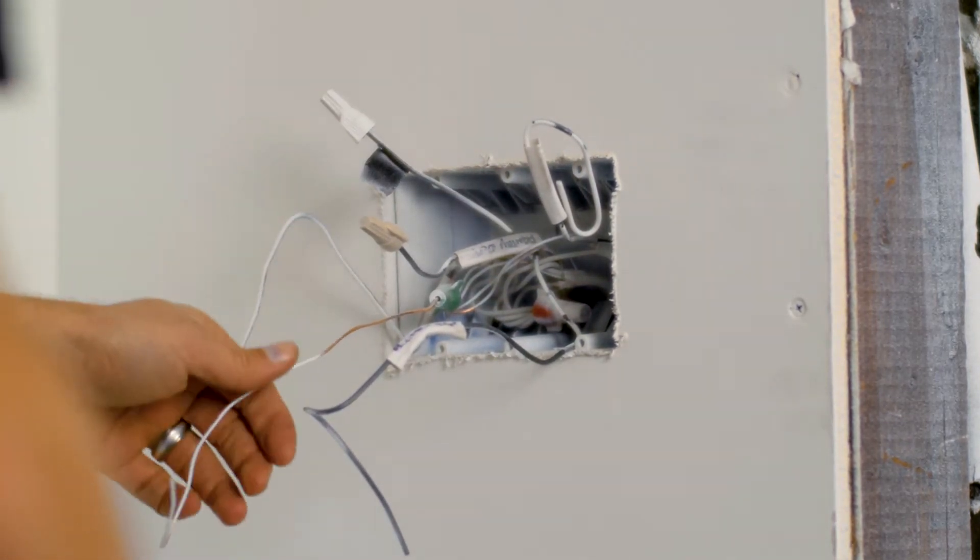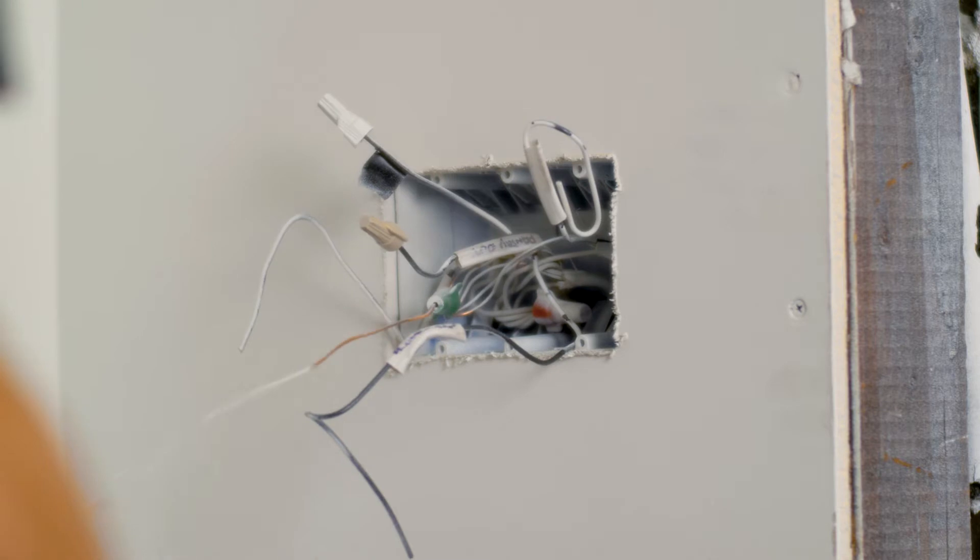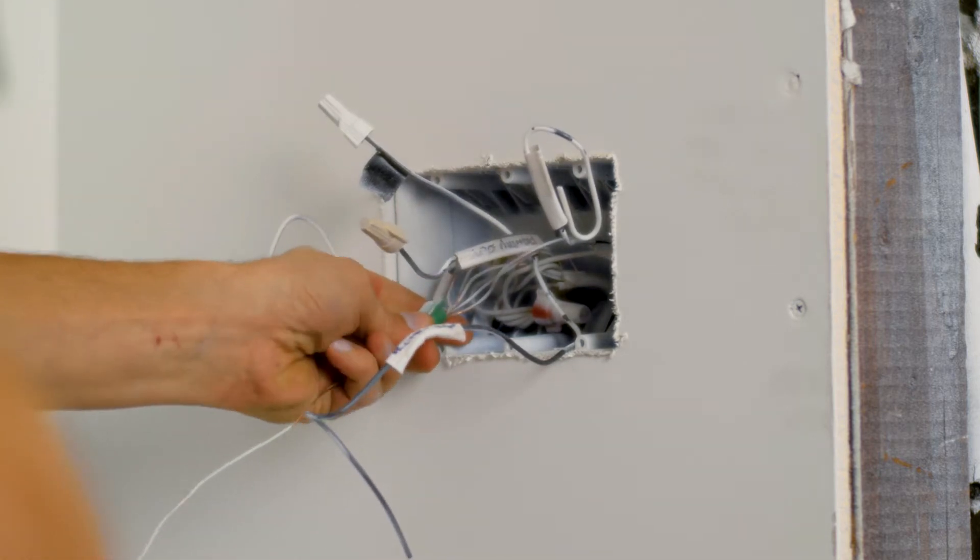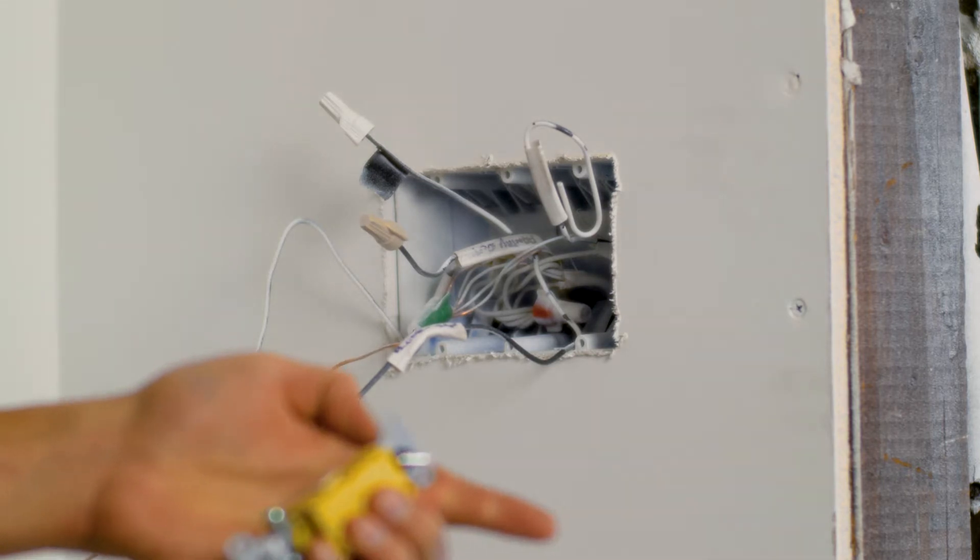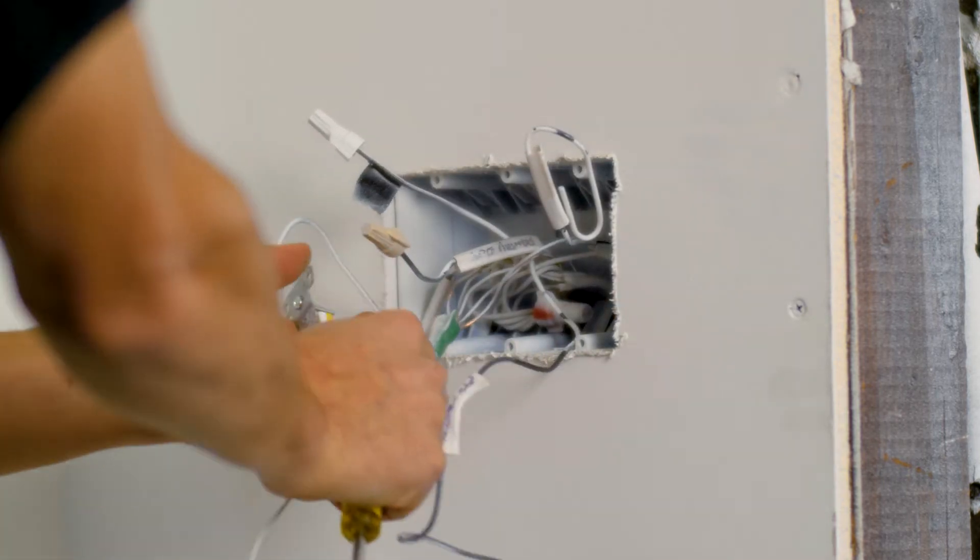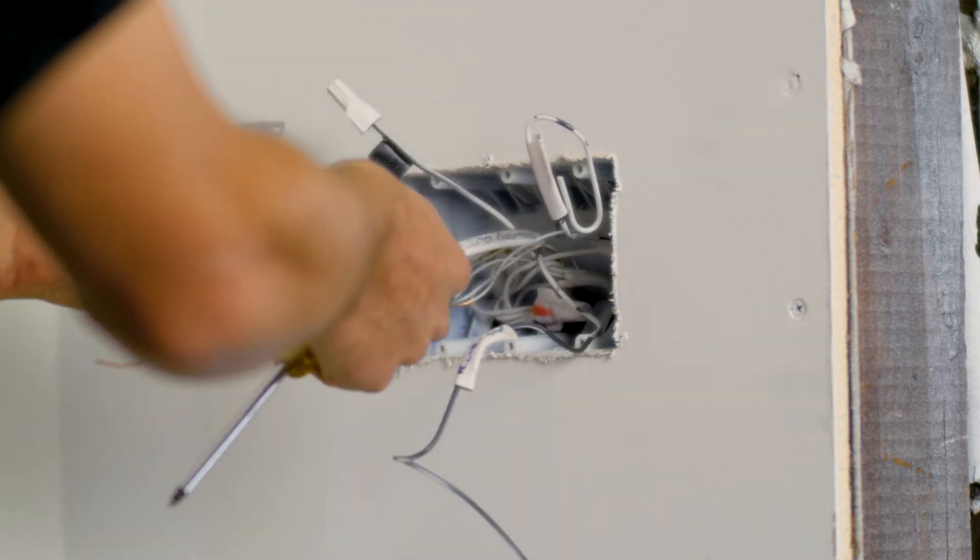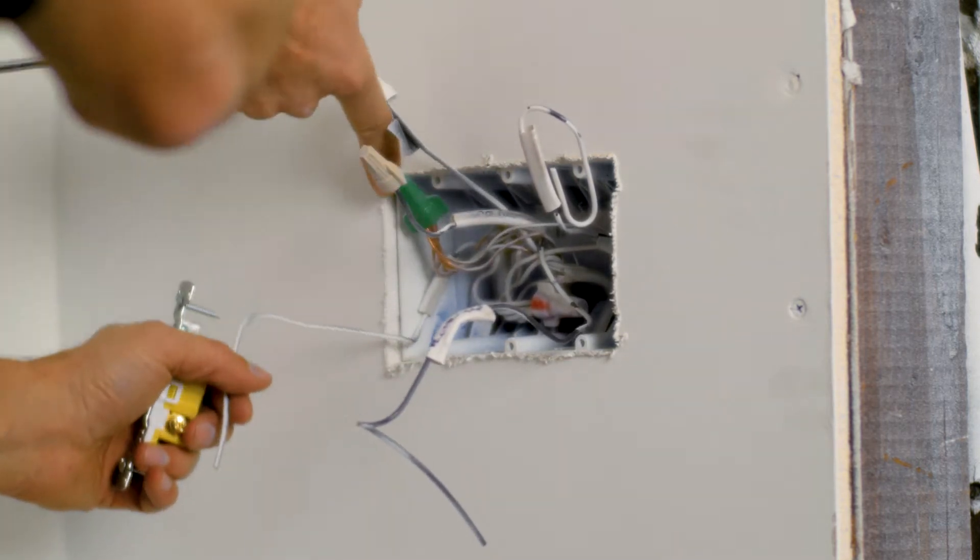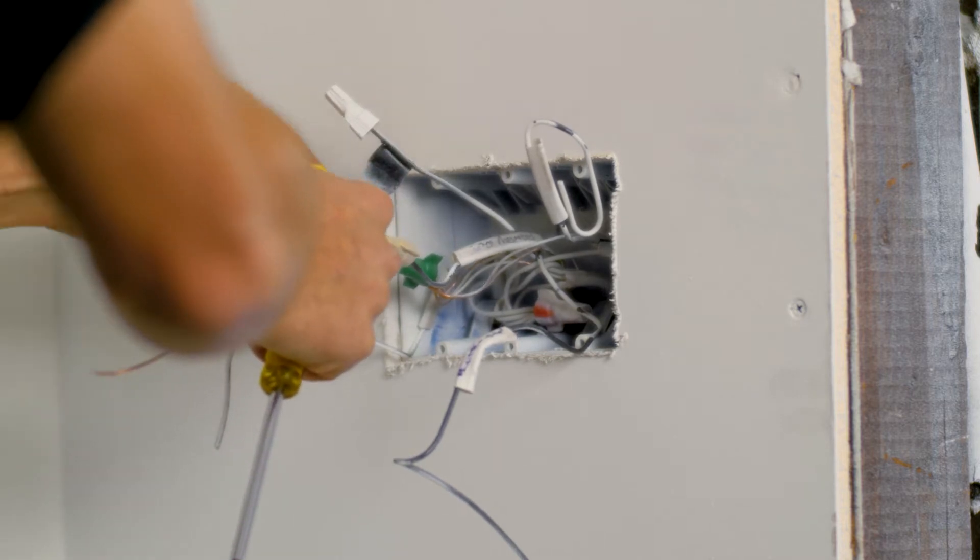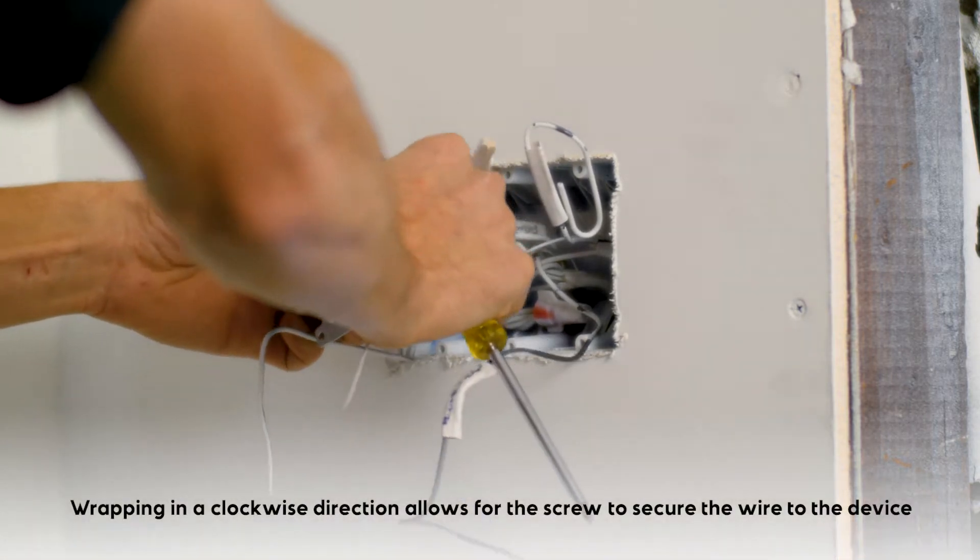Here I've got my ground which is long enough to wrap around all three because it's a three-gang box. I have three devices going in. All three ground screws on my devices, and I'm going to start with that. The orientation of my device ground is at the top, so I'm going to prepare for that. I'm going to wrap up in the clockwise direction.